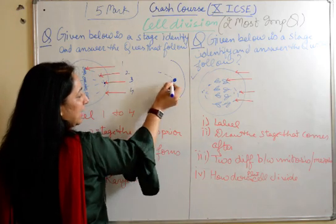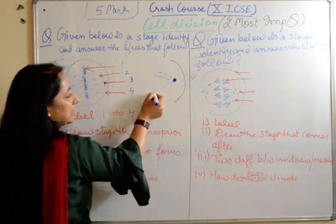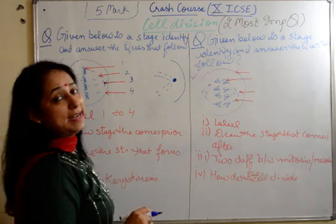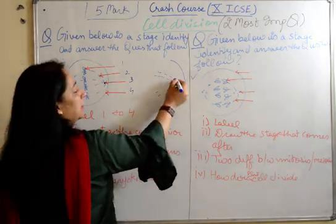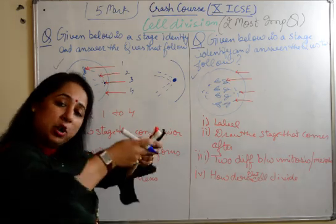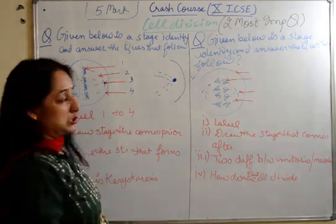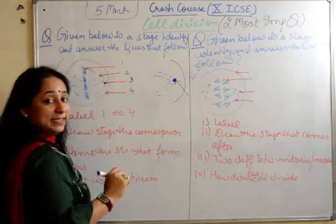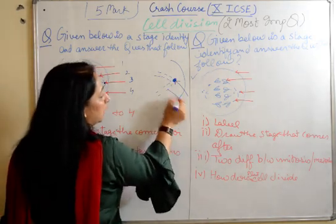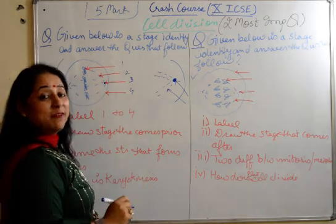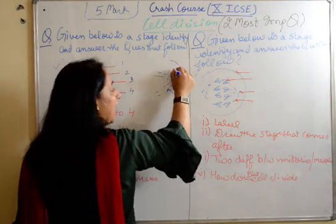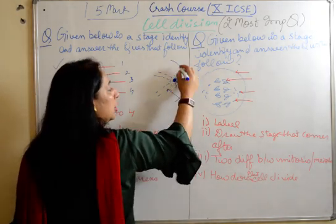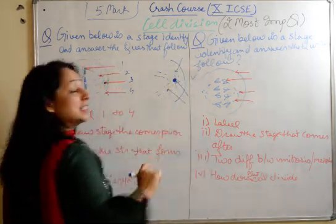We have this labeling here. Children label it as centrosome - you don't have to label centrosome. This is centriole. Centrosome has already divided into two centrioles. If the arrow points towards this, this is centriole. If the arrow points towards this, this is spindle. We have aster rays also, so if the arrow points towards this, this is aster rays.